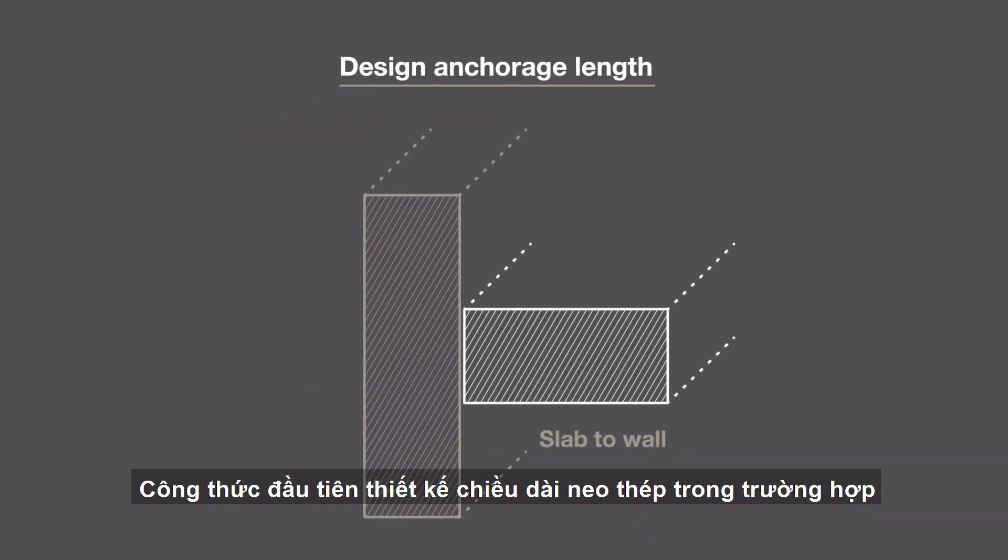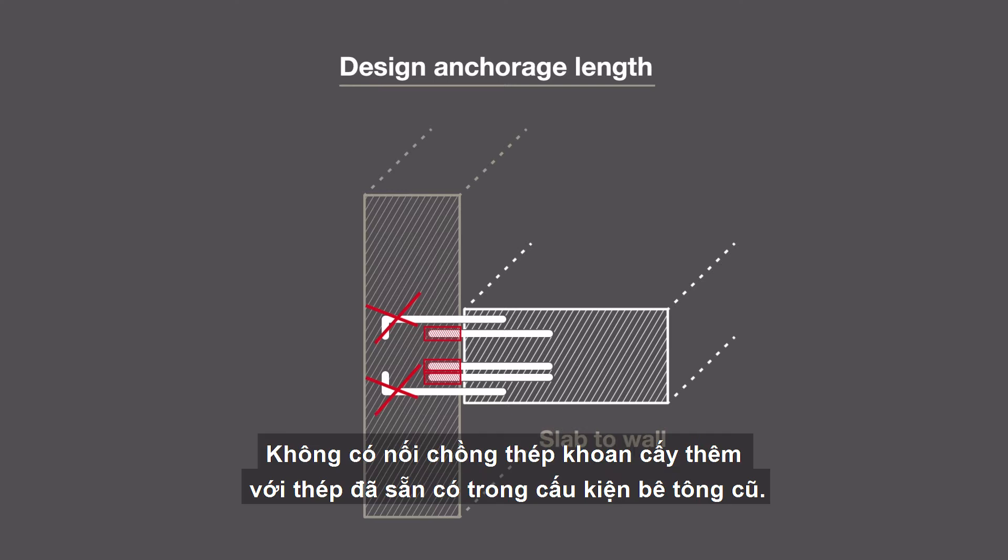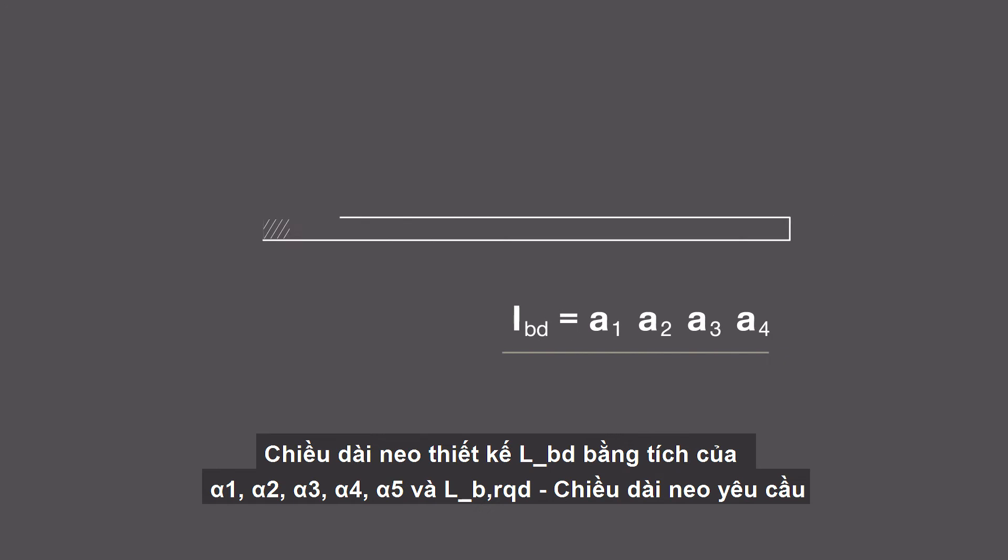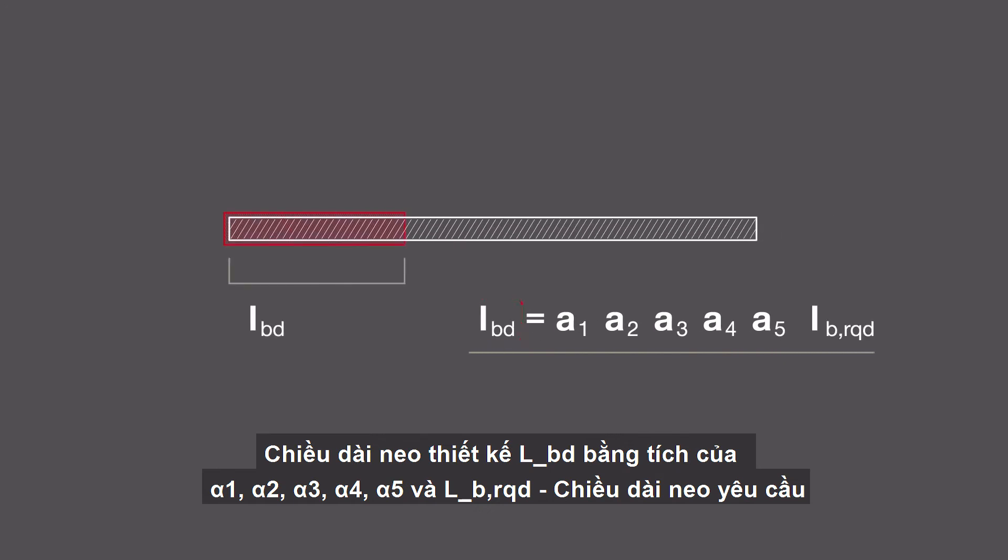The first formula calculates the design anchorage length when there is no reinforcement to splice the new rebar in the existing structural member. The design anchorage length l_bd is equal to a1 times a2 times a3 times a4 times a5 times lb required.